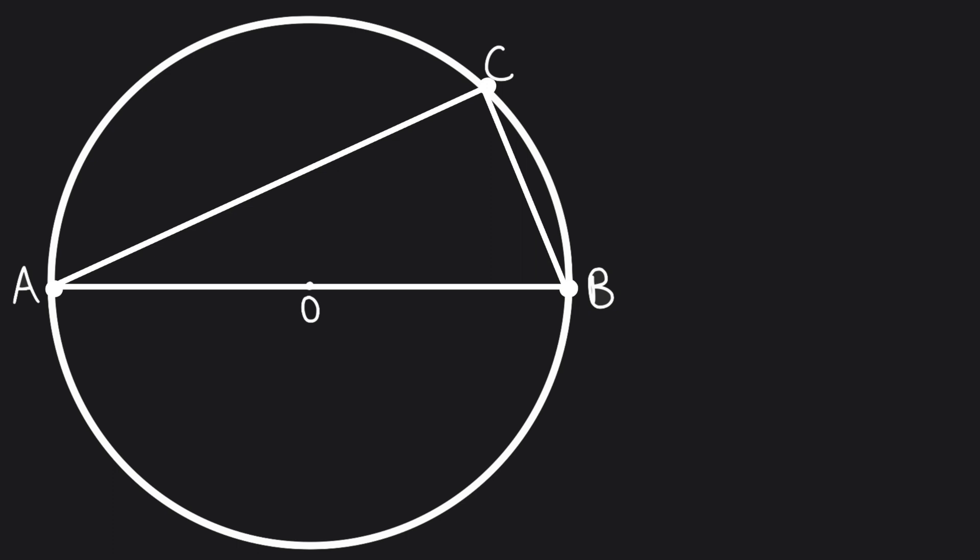We can begin with our proof. Let's connect the center O to the point C on the circle. OC is a radius, and so are OA and OB, because the center lies exactly between a diameter, and because a radius is always half the length of a diameter.